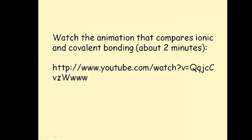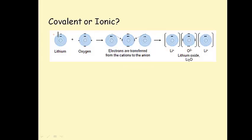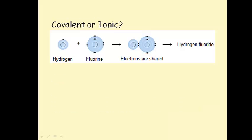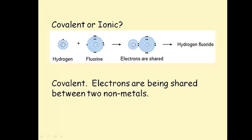Watch the animation that compares ionic and covalent bonding — it takes about two minutes. Here are some testers. Covalent or ionic? Lithium combines with oxygen and electrons are transferred from the cation to the anion, resulting in lithium oxide — this is ionic, as electrons are transferred from the metal to the nonmetal. Covalent or ionic? Hydrogen plus fluorine gives shared electrons, resulting in hydrogen fluoride — this is a covalent bond, as electrons are shared between two nonmetals.